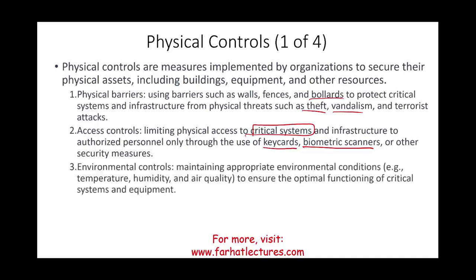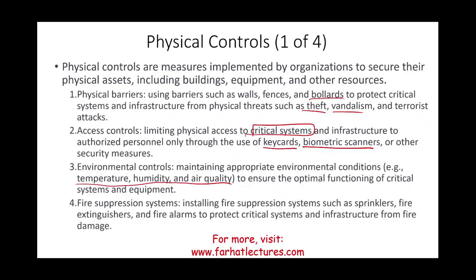Third, you need environmental controls. Servers and computers require an optimal temperature to function. Maintaining appropriate environmental conditions — including temperature, humidity, and air quality — ensures the optimal functioning of those systems. This is part of making sure systems don't go down due to extreme temperatures or poor air quality. A fire suppression system is also part of physical controls.